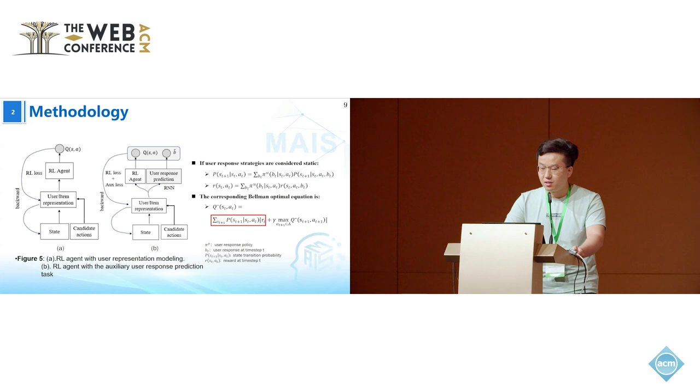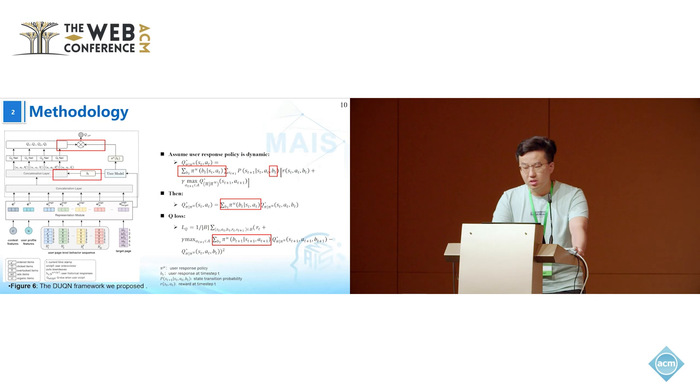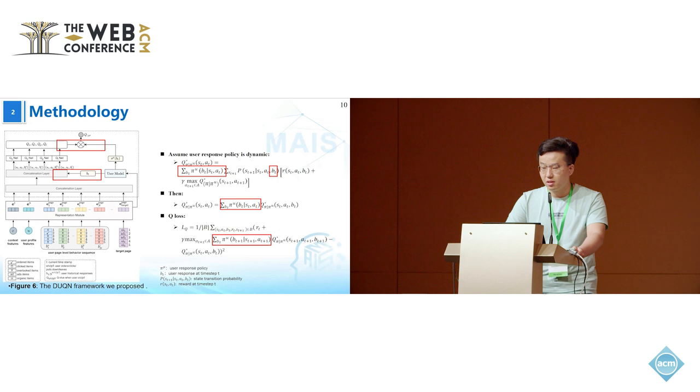And then, its impact does not need to be directly considered in the state transitions, just like the Q value function. Here, we don't need to consider the user's response B. Our approach is based on opponent modeling perspective, where user's policy is considered dynamic. Therefore, it is necessary to consider user response B in both state transitions and rewards, resulting in a change in the formulation.